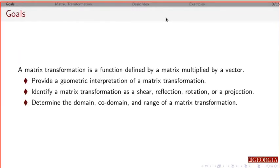So when this is over, you should be able to give a geometric interpretation of what a matrix transformation is given a matrix. If I give you a matrix, you should identify whether it's a shear, reflection, rotation, or projection, and you should be able to determine the domain, the co-domain, and get the basic idea of the range. That should be a little fuzzy after this. It's something we're going to take the next couple sections to really go over and explore.